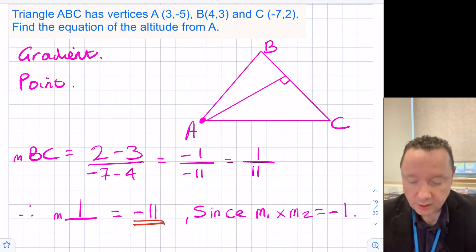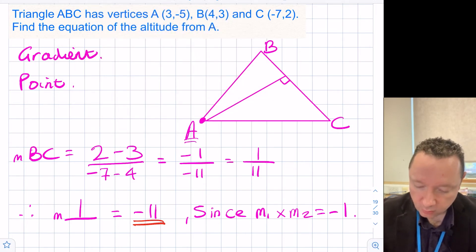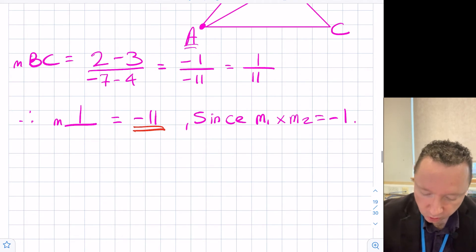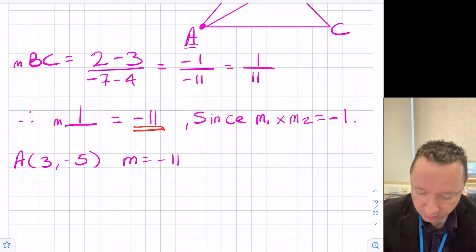We now need also the point, and use Y minus B equals MX minus A. So the point, remember, we're using this point A, which is (3, -5). So using point A, which is (3, -5), and our gradient, which is -11.